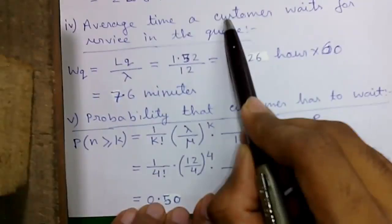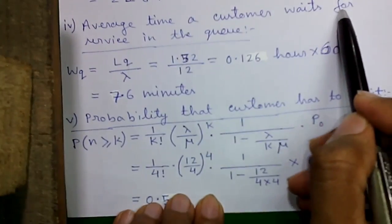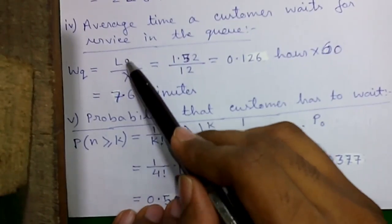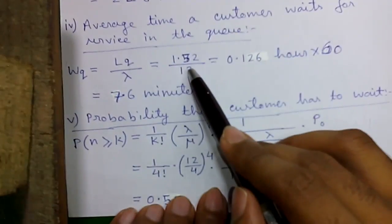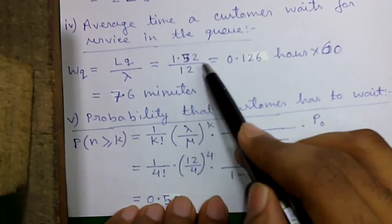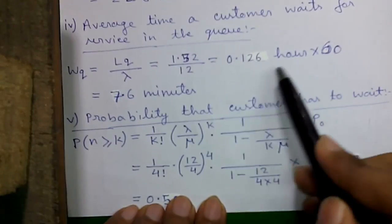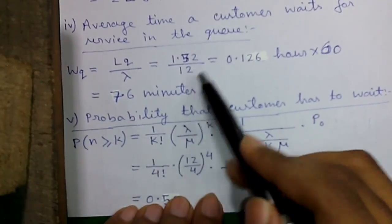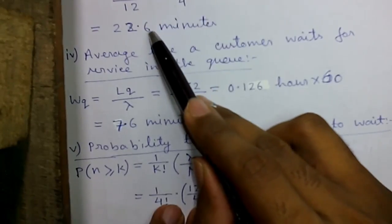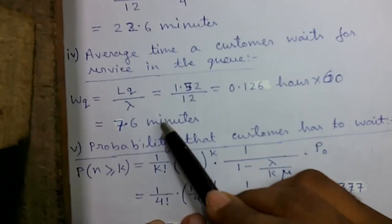Average waiting time per customer in the queue: Wq = Lq/λ = 1.52/12 = 0.126 hours × 60 = 7.6 minutes. So out of 22.6 minutes spent in the service center, the customer waits 7.6 minutes in the queue.